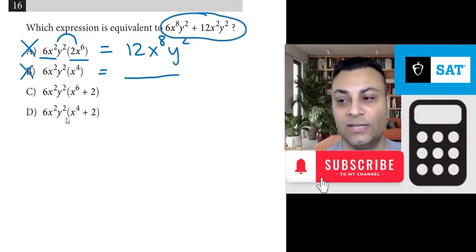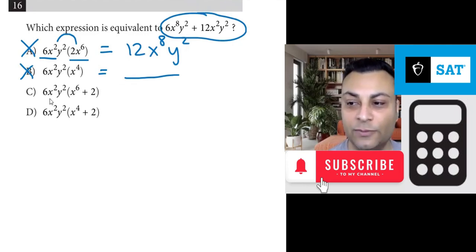And what's going on with c and d? Well, the only difference between c and d is this term. x to the sixth versus x to the eighth. Everything else is the same.